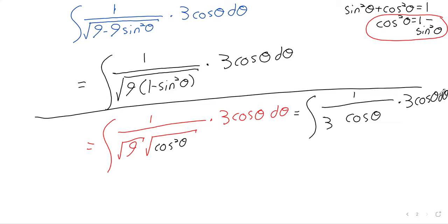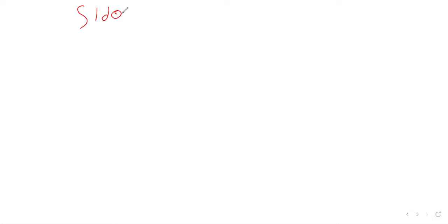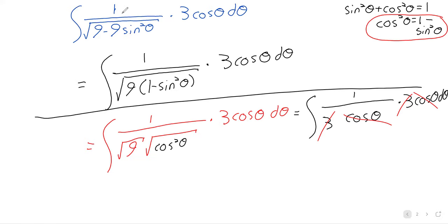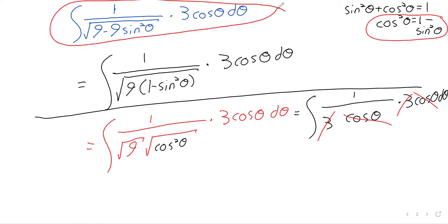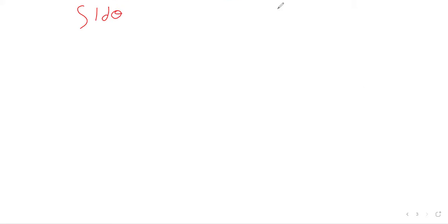Now this 3 and this 3 and this cosine and this cosine all cancel each other out. And from what looked like an absolute disaster, we somehow got a really nice integral that we can take — the integral of 1 is theta.